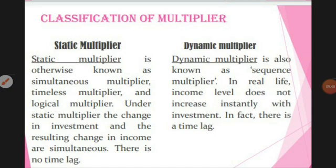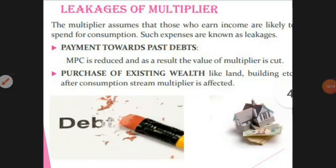The dynamic multiplier is also called the sequence multiplier or real income multiplier. The increase does not happen suddenly or instantly — it won't increase like the next morning or the next month immediately. Gradually and slowly it will come. There will be a significant time lag to increase income and consumption.